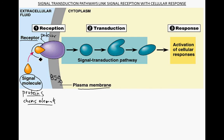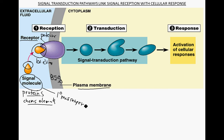There's a binding between the receptor and the signal molecule, and that binding indicates a conformational relationship — the shape of the signal molecule fits with the shape of the receptor. The signal molecule is oftentimes referred to as the primary messenger, and sometimes you also hear it called a ligand, which binds to the receptor.